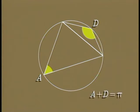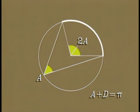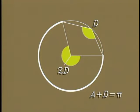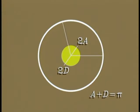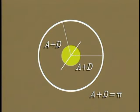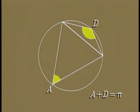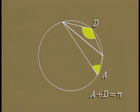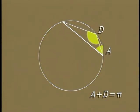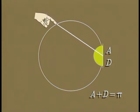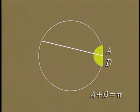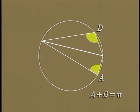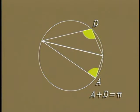Why? Because each is half its central angle, and the two central angles together fill the circle, forming two straight angles. There's another way to look at this: the measure of an inscribed angle doesn't change as you move its vertex along the circle. When you place the two inscribed angles together, they form a straight angle. No matter where the chord lies on the circle, the two inscribed angles cutting off that chord are supplementary.